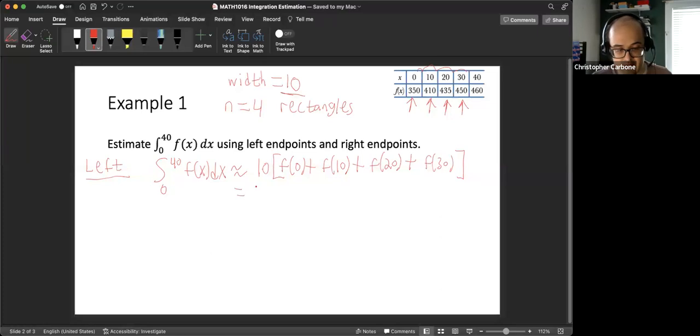So since we have it in the table, we are going to have 10 times the value of the function at 0 is 350. The value of the function at 10 is 410. The value of the function at 20 is 435. And the function value at 30 is 450. Add all this up, multiply by 10, we should get an answer of 16,450 for the left endpoints.